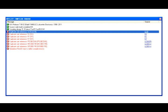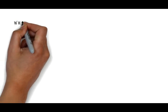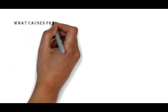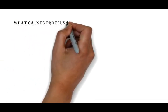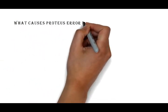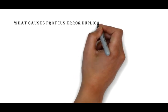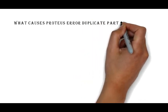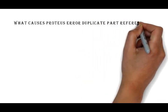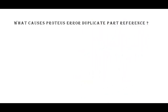So this is the image of the error. Here is the error occurrence of the duplicate part reference. So what causes the Proteus error duplicate part reference and how to solve this?